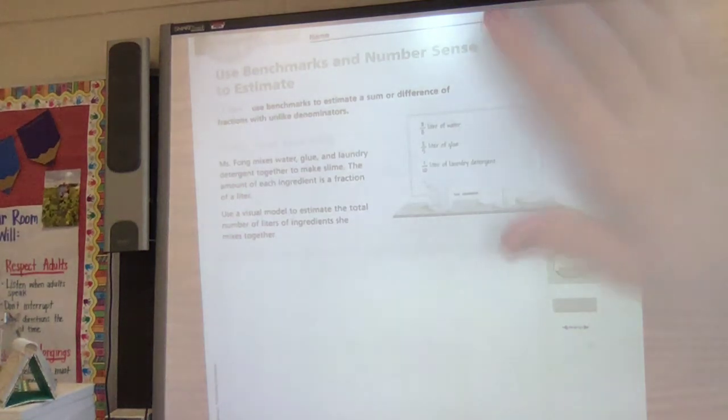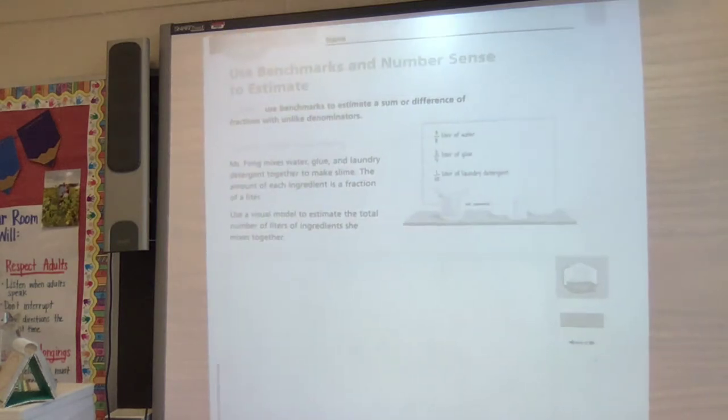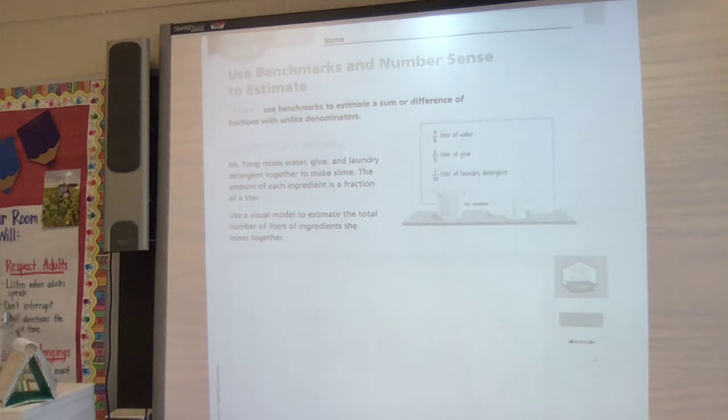Hey guys, today we are in your module 1 through 9 book, starting module number 7, we're on page 149. So today we're going a little farther, we've been adding and subtracting fractions so far, and today we're going to talk about how we can use benchmarks to estimate a sum or difference of fractions with unlike denominators.